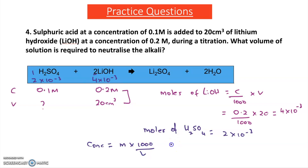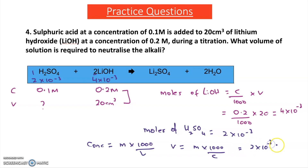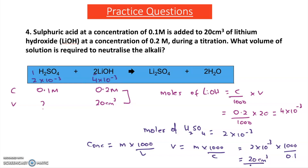To find the volume of sulfuric acid, I rearrange the equation: volume = moles × 1000 ÷ concentration = 2 × 10⁻³ × 1000 ÷ 0.1 = 20 cm³.